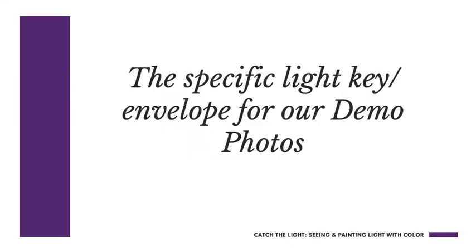Now for the specific light key envelope for our demo photos. We have two situations: one night scene where illumination comes from the moon and one where it comes from a streetlight — a rural and an urban situation. There's a lot of similarity between the two, though some differences. Remember that photographs lie — the photograph will expose for either the strongest light source or for the landscape, so light sources in nighttime photos can look much brighter than the eye actually perceived.